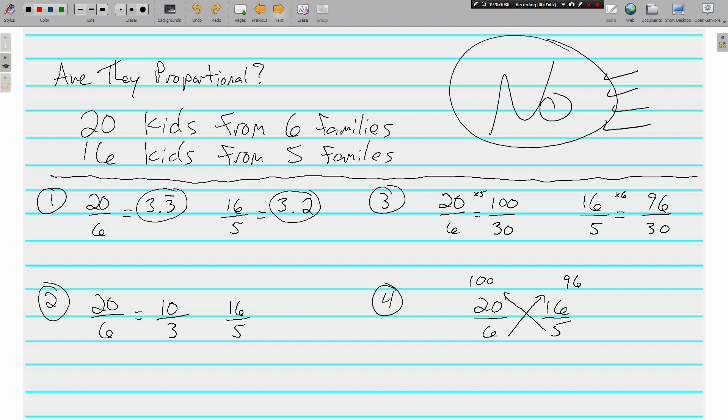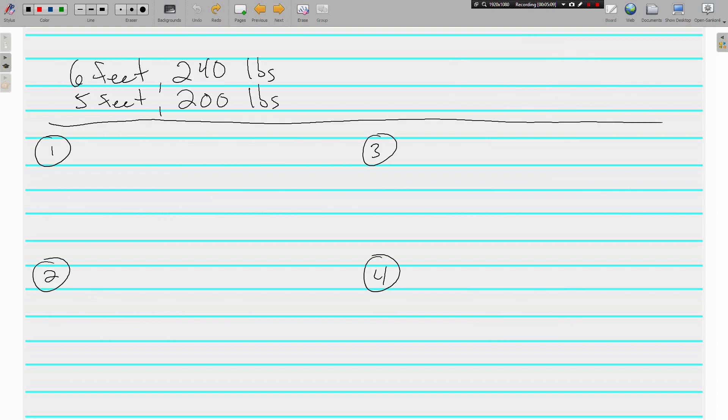Four different ways that we can tell that these two expressions are not proportional. Let's look at another example. 6 feet, 240 pounds, and 5 feet, 200 pounds. We want to know, are they proportional?